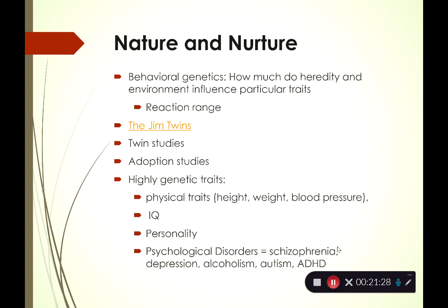Based on research in behavioral genetics, some traits are highly genetic — especially physical traits like height, weight, blood pressure, and cholesterol. IQ can be best predicted by the IQ of your biological parents — maybe about 50% prediction. Personality shows similarities to biological parents as well. There are also many disorders that run in families — for psychology, mental health issues are of concern. Disorders like schizophrenia, depression, alcoholism, autism, and ADHD are highly genetic, so you're at risk if they're in your family tree, as are your children.